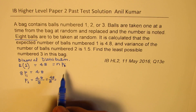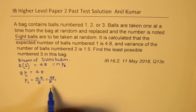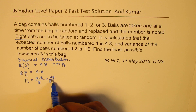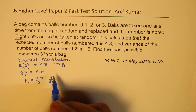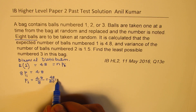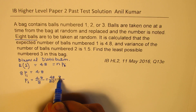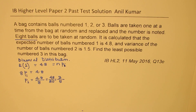We can simplify 4.8 over 8 as 48 over 80, and dividing both by 16 gives us 3 over 5. So that gives you the probability that out of 5 balls, 3 are with number 1. So P1 = 3/5.